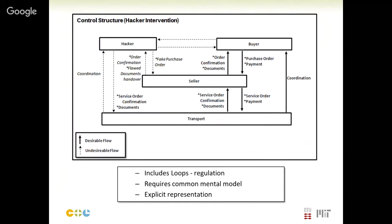This representation includes loops and gives a first depiction of the regulation processes happening in a supply chain. It requires a common mental model — it's not something one person generates alone; it must be a shared process within organizations so that all agents' understandings of how systems are run can be combined into one representation. It is an explicit, graphical way of sharing how the company communicates and flows its information.